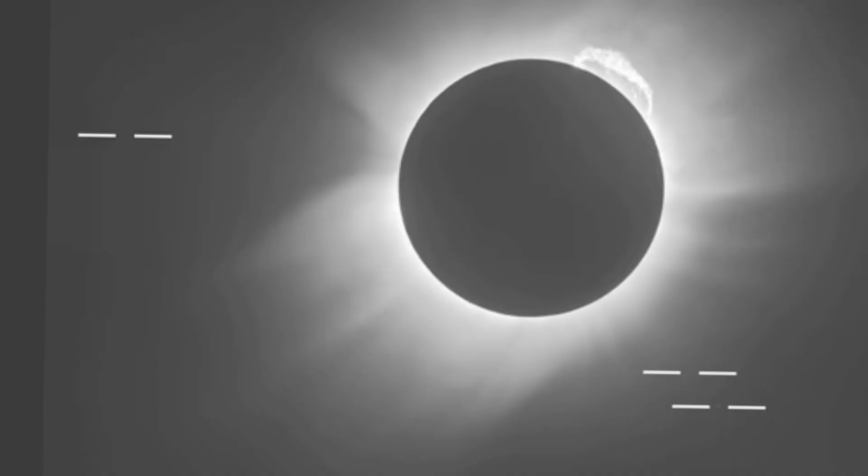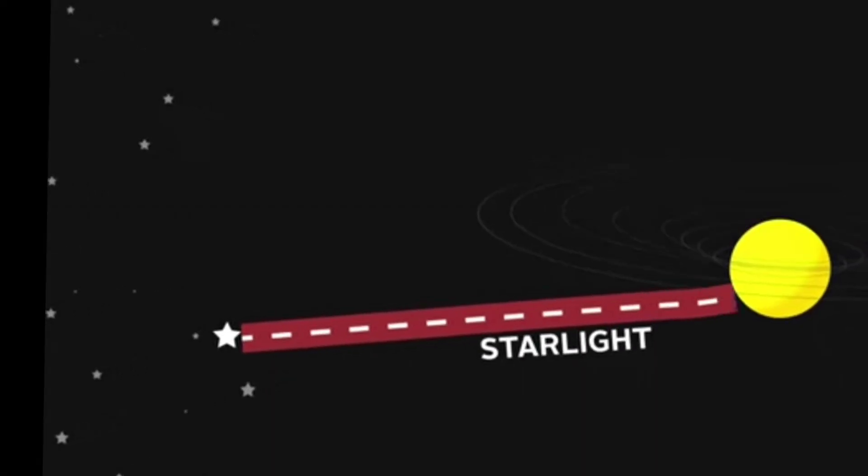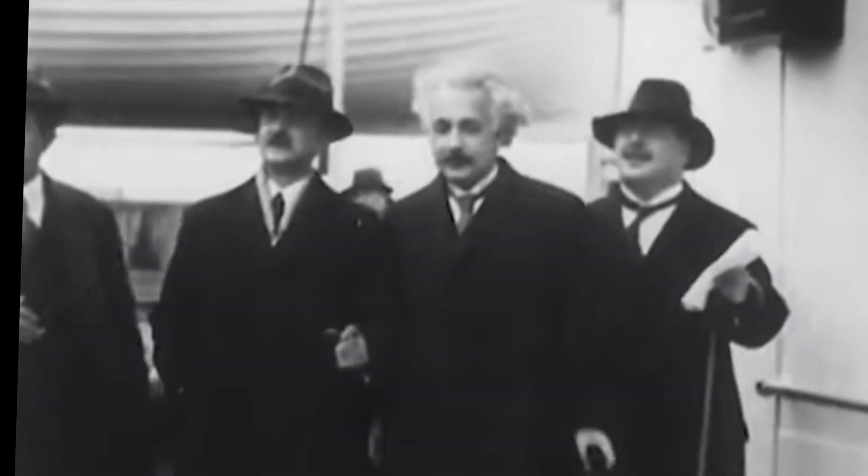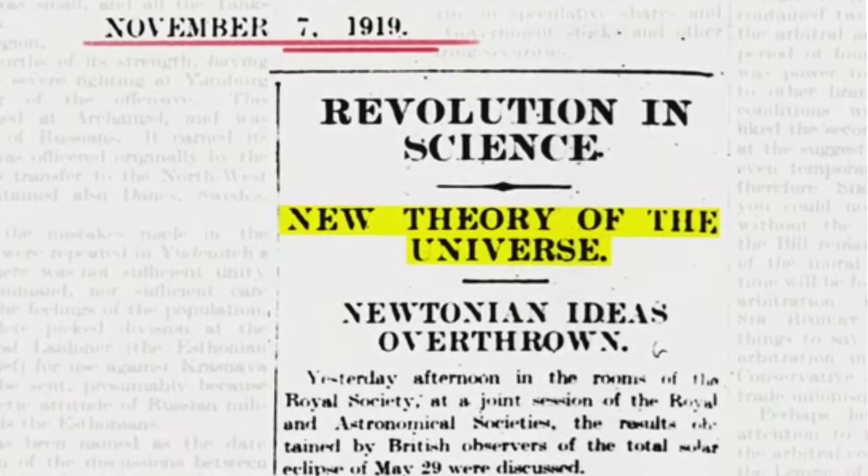As I already mentioned, Eddington proved this in 1919. He just took the photos of stars during solar eclipse. He observed shift of stars due to this curvature. After proving theory of relativity is right, Einstein became celebrity. He became icon of physics.